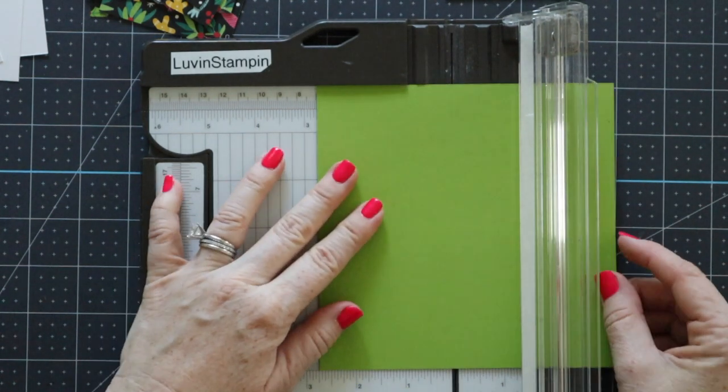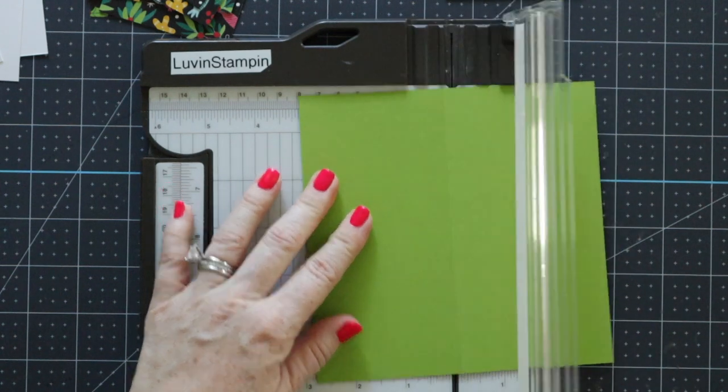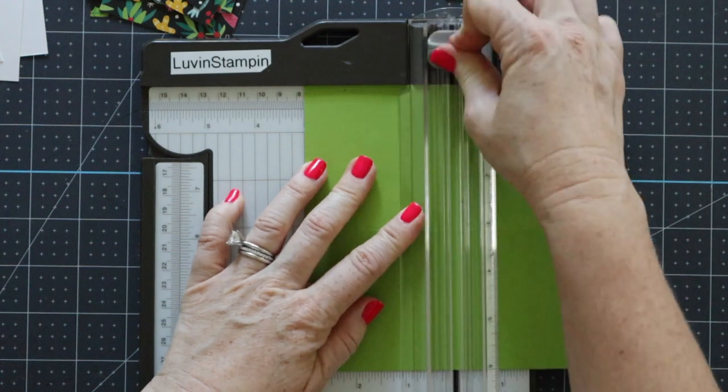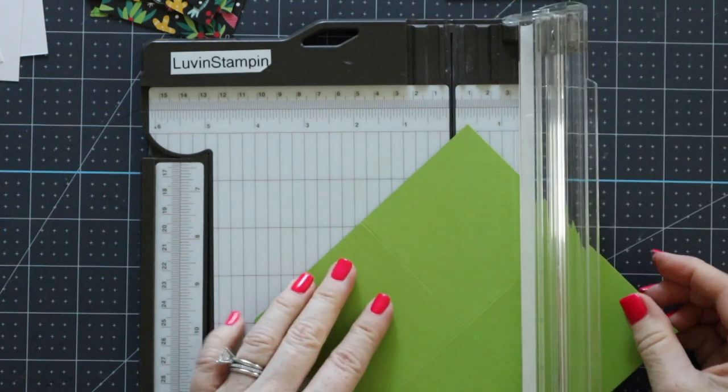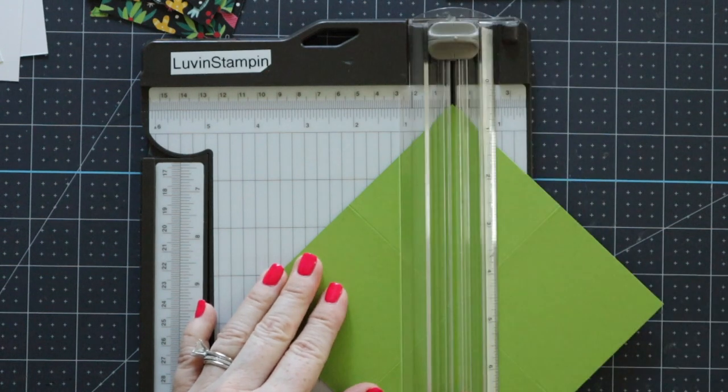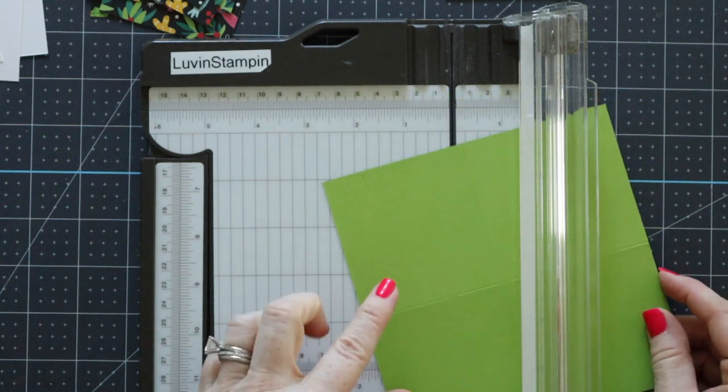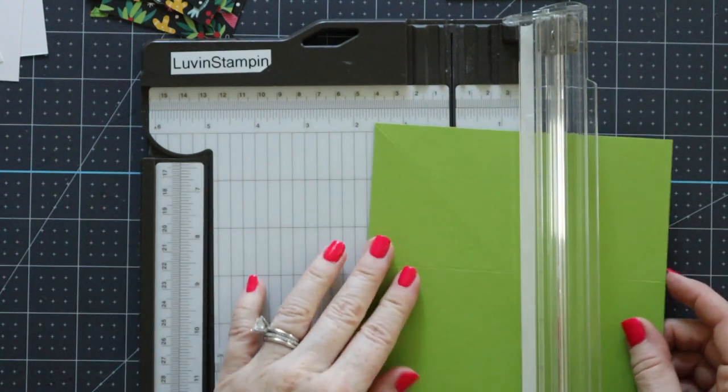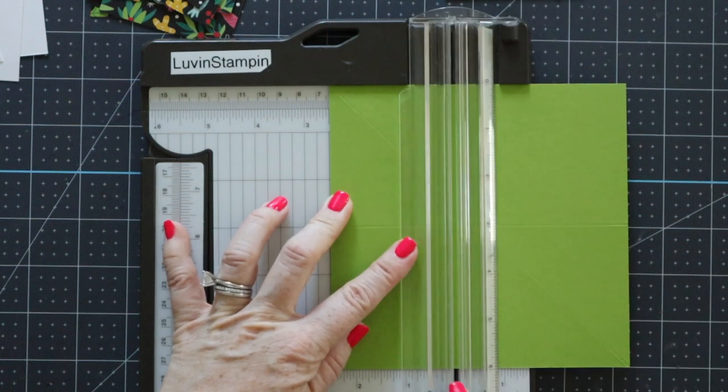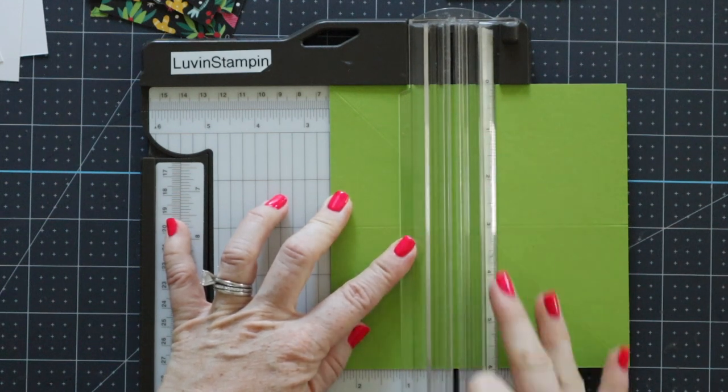We're going to take each piece of this Granny Apple Green cardstock and score it at 3 inches on each side and then on the diagonal. Then we're going to score again at 2 1/2 inches just on one square. You want one of the full squares and then you're going to score from the bottom up to the 3 inch score line.